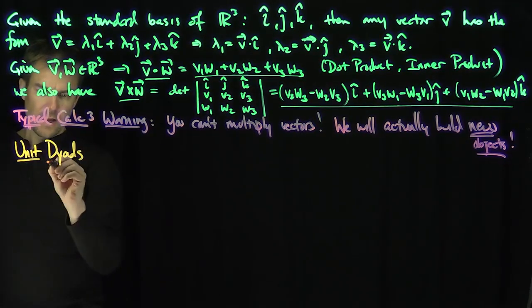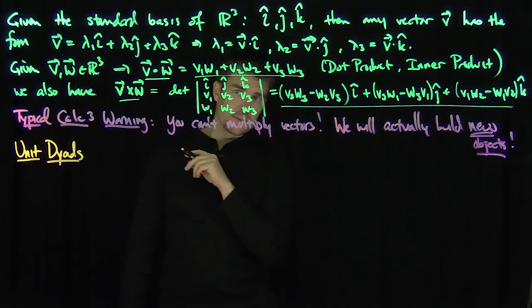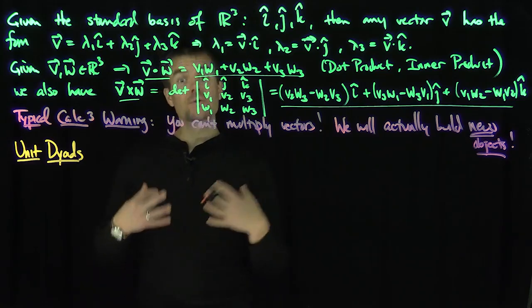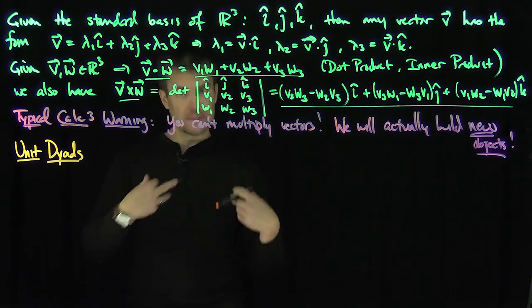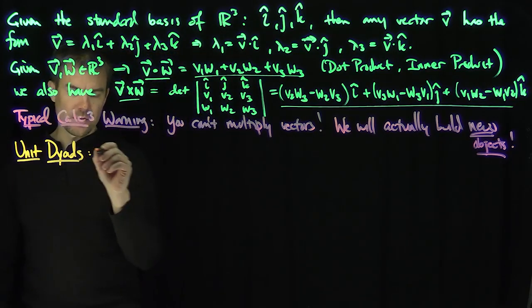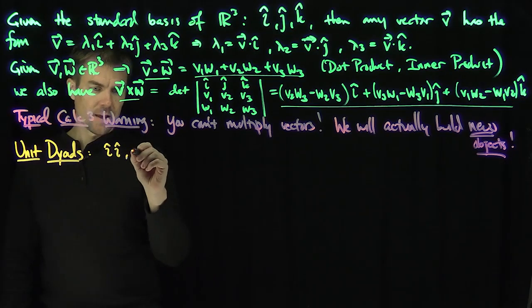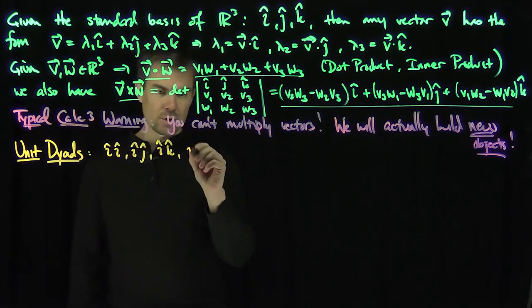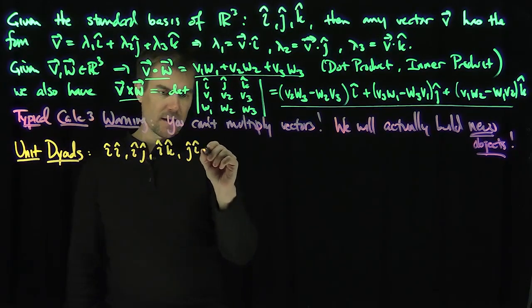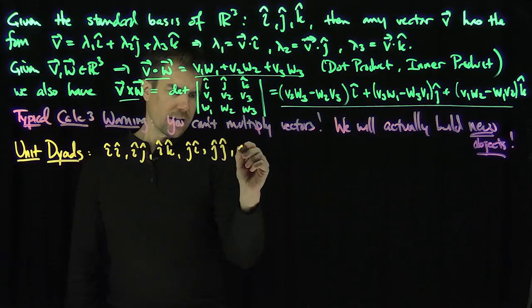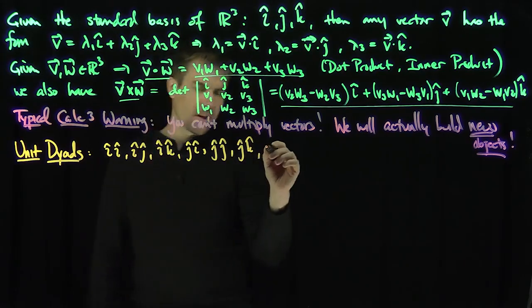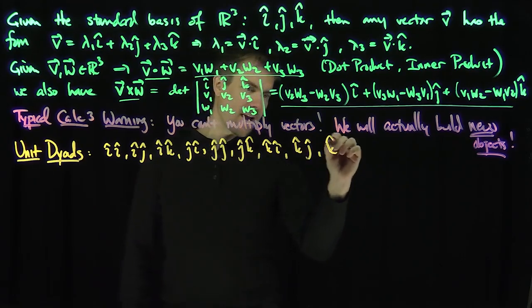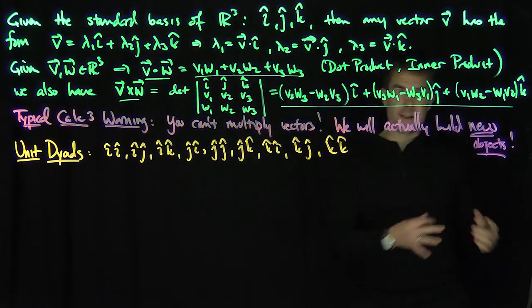And there are going to be nine of these unit dyads, and they're exactly what you imagined they would be. In other words, these things are constructed so that you can actually formally multiply or outer product vectors together. What are these unit dyads? They're i-hat i-hat, then i-hat j-hat, then i-hat k-hat, then j-hat i-hat, then j-hat j-hat, then j-hat k-hat, k-hat i-hat, then k-hat j-hat, then k-hat k-hat. And these are the unit dyadic tensors.